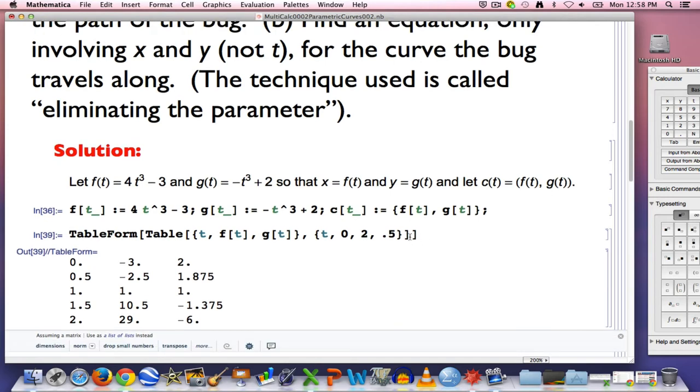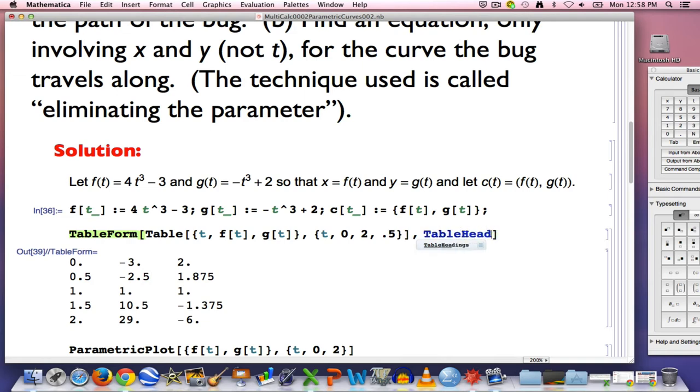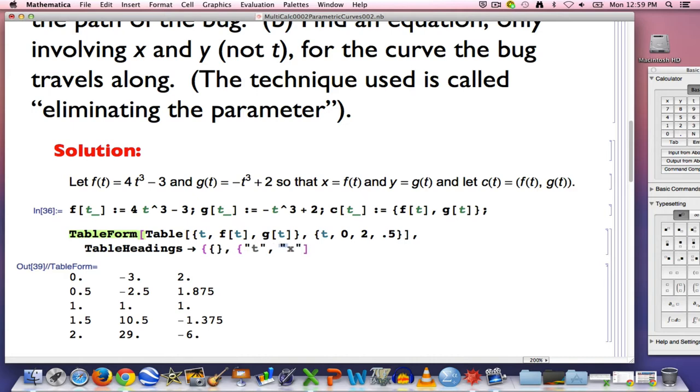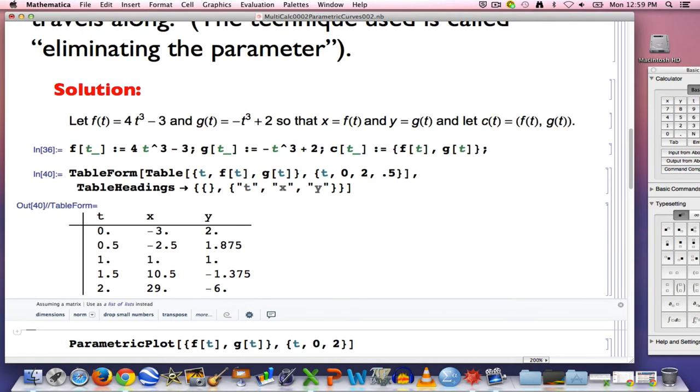I'm going to use a formatting command called table form to show the output as a table. There you see, it looks like a table now. Finally, I'm going to add some headings to this table to label these columns. I'm going to put a blank list in for the rows. And then if I put another comma and curvy braces with t in quotes, comma x in quotes, comma y in quotes, that will label the columns t, x, and y. This column is the t values, but you don't plot those. You plot the corresponding points whose coordinates are given by these numbers, x and y.